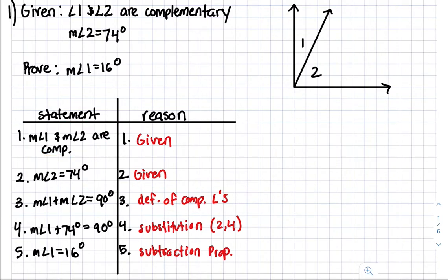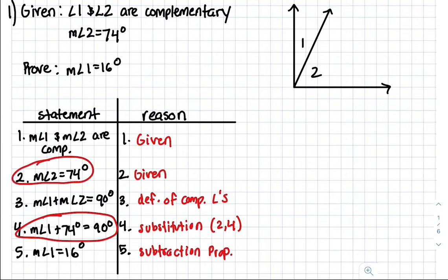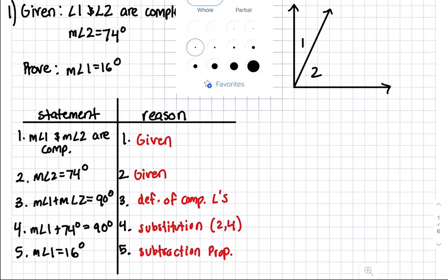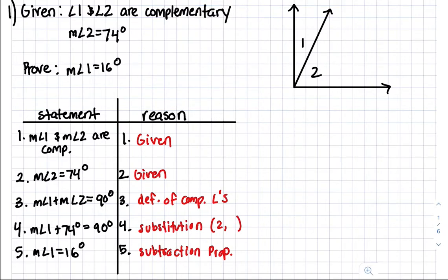When we get to statement 4, the reason we can write it is because we use the second statement — since measurement angle 2 is equal to 74, we can substitute that in. So if we substitute 74 in for measurement angle 2, that's how we get statement number 4. The reason is substitution using lines 2 and 3.